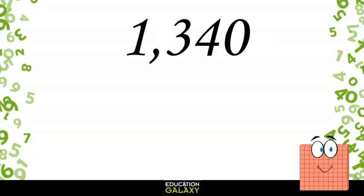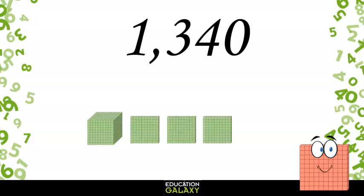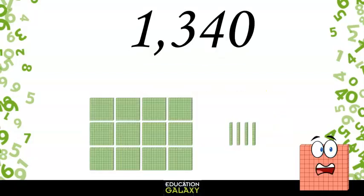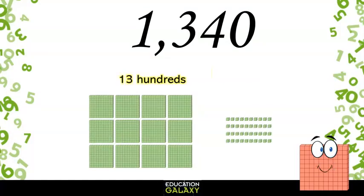It's made up of 1,000, 3 hundreds, and 4 tens. But we can also break it up a couple of different ways as well. It can be 13 hundreds and 4 tens or 134 tens and 0 ones. Each of these still give us 1,340, but we're broken up different ways using the number's place values.